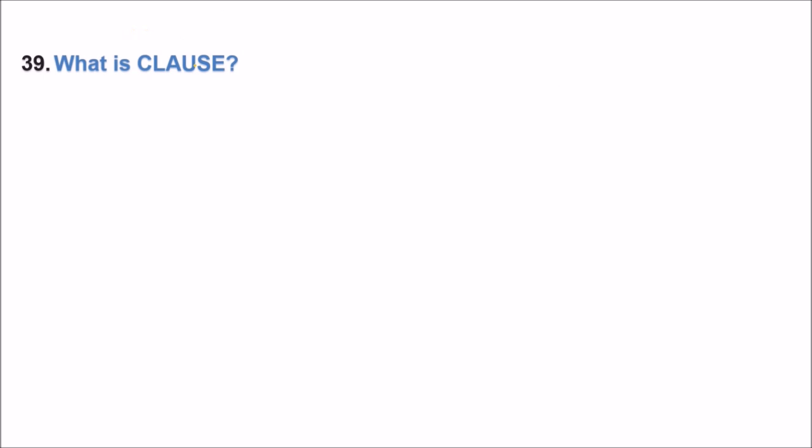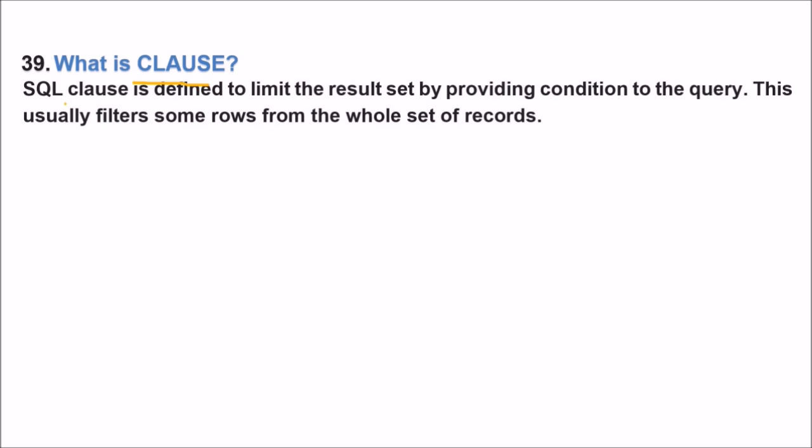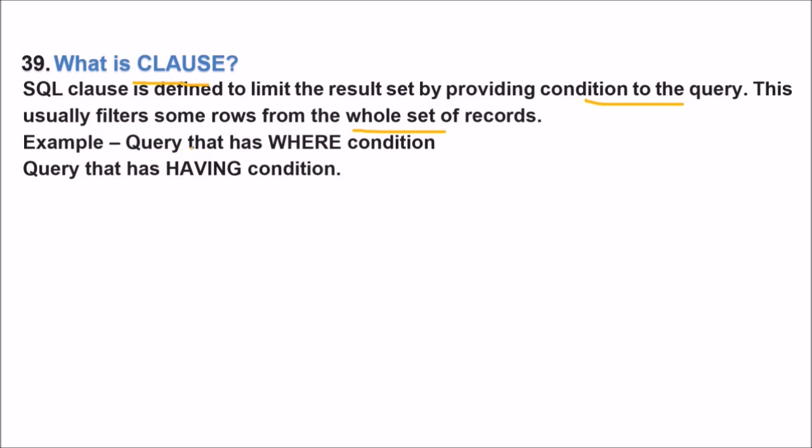Next is what is a clause? A SQL clause is defined to limit the result set by providing condition to the query. So you provide a condition that is used as SQL clause. This usually filters some rows from the whole set of records. So you want some specified information you get from the clause. For example, query that has WHERE condition. These are all clauses having WHERE.